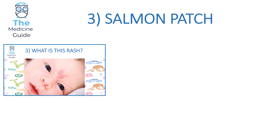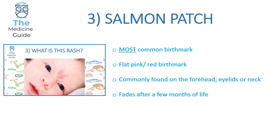Rash 3 is an example of a salmon patch, the most common birthmark found in paediatrics. It is a flat pink birthmark typically found on the forehead, eyelids or neck, and it tends to fade away after a few months of life. If a baby presents with this rash, parents can be reassured — it is not pathological, will not impair development, and will fade away after a few months.